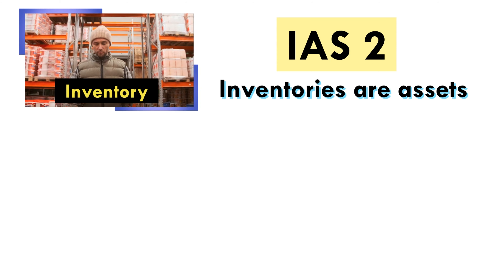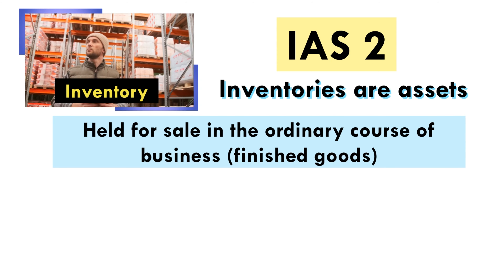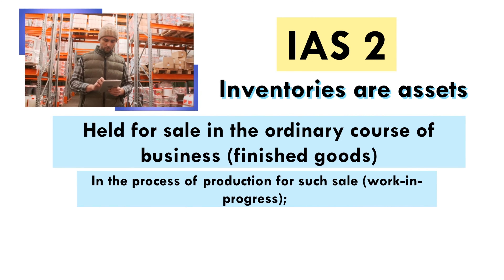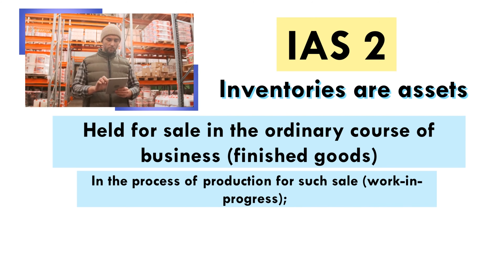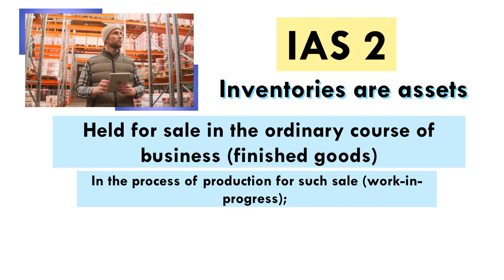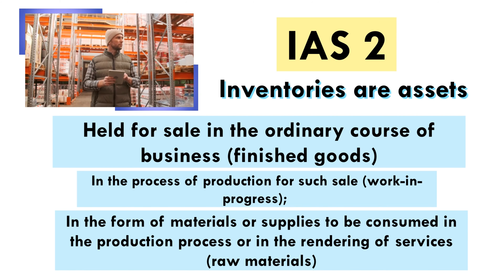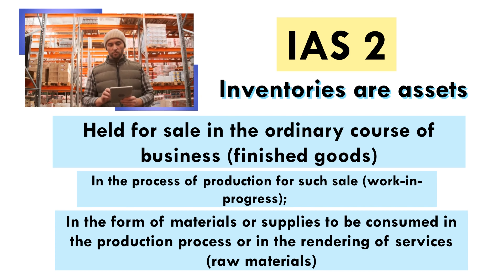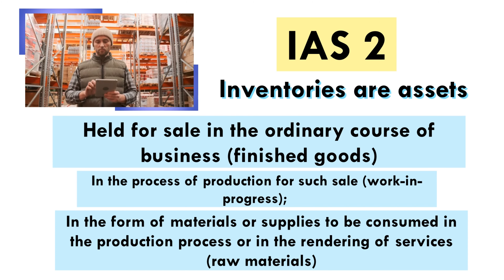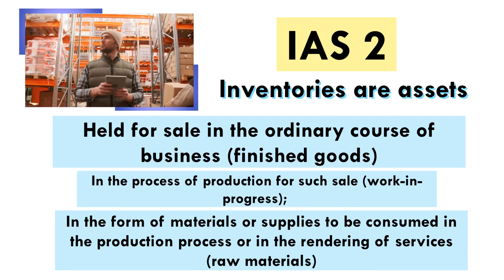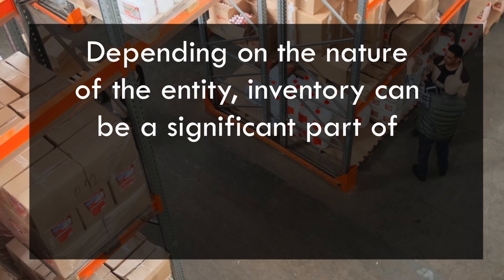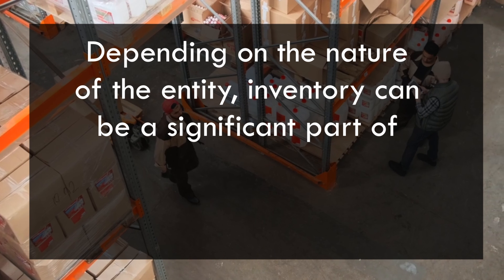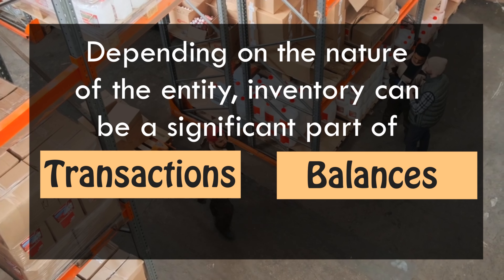According to IAS 2, inventories are assets: one, held in the ordinary course of business — so these are finished goods; two, in the process of production — that is work in progress; and three, in the form of materials or supplies to be consumed in the production process or in rendering of services — so we can call these raw materials. Depending on the nature of the entity, inventory can be a significant part of the transactions or balances.